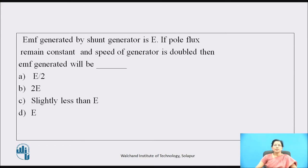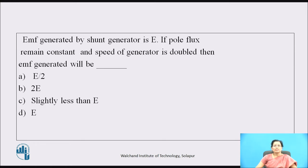Now pause the video and find out the answer for this question. EMF generated by a shunt generator is E. If the pole flux remains constant and the speed of the generator is doubled, then the EMF generated will be — E by 2, 2E, slightly less than E, or E? The answer is 2E, because the generated EMF is directly proportional to speed, and here the speed of the generator is doubled.